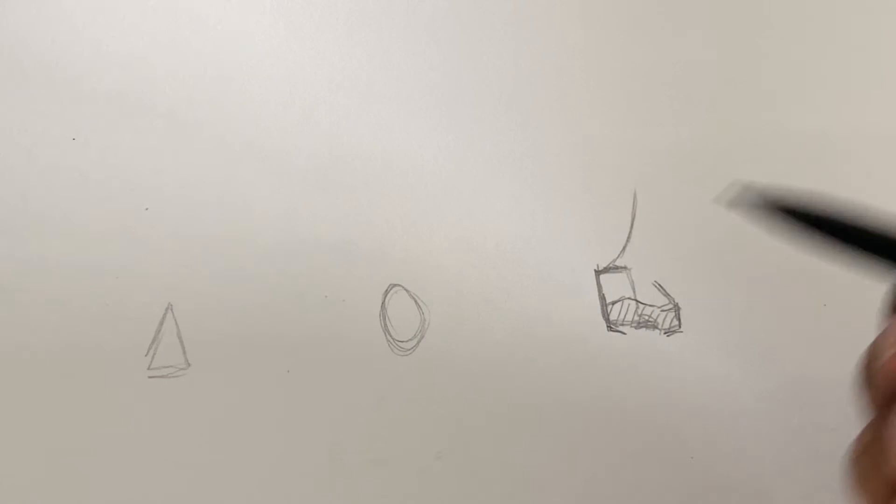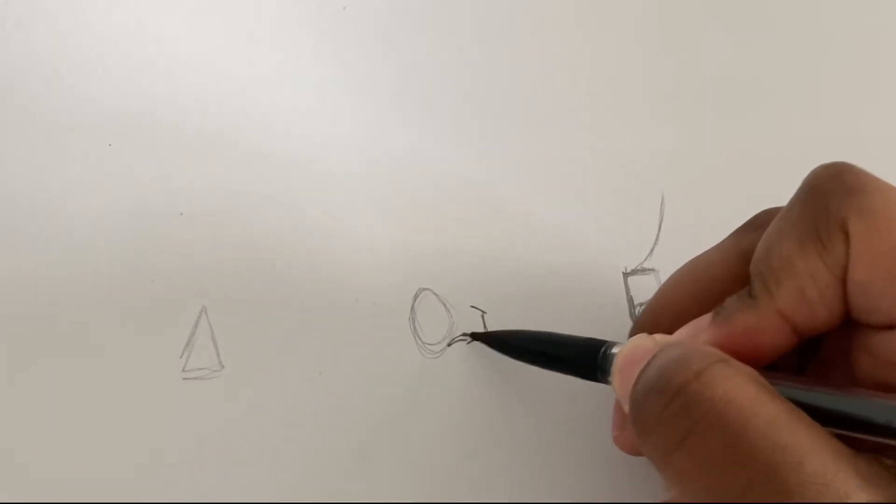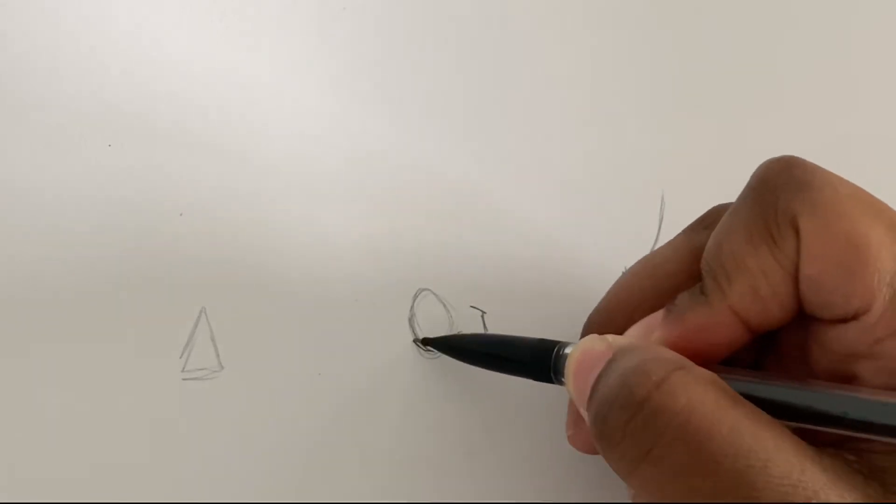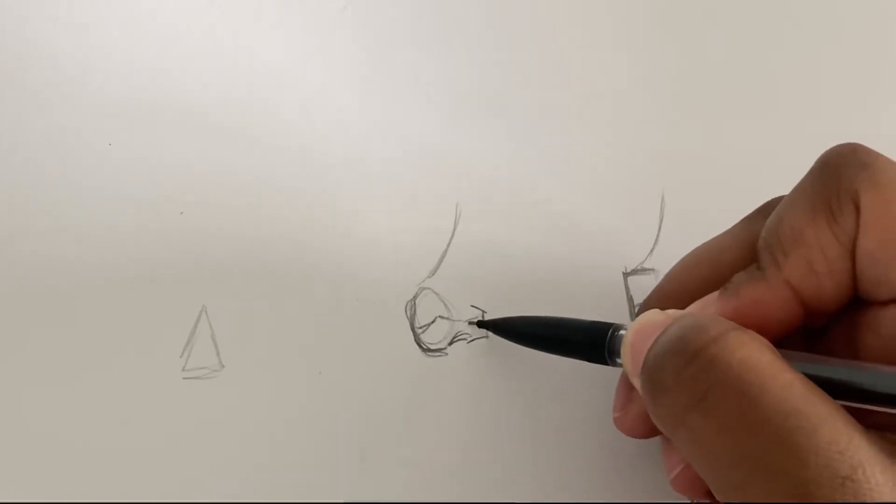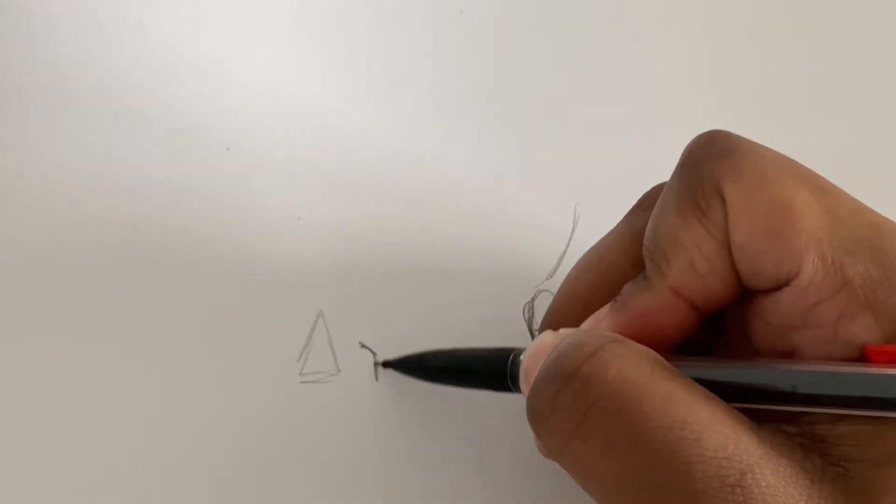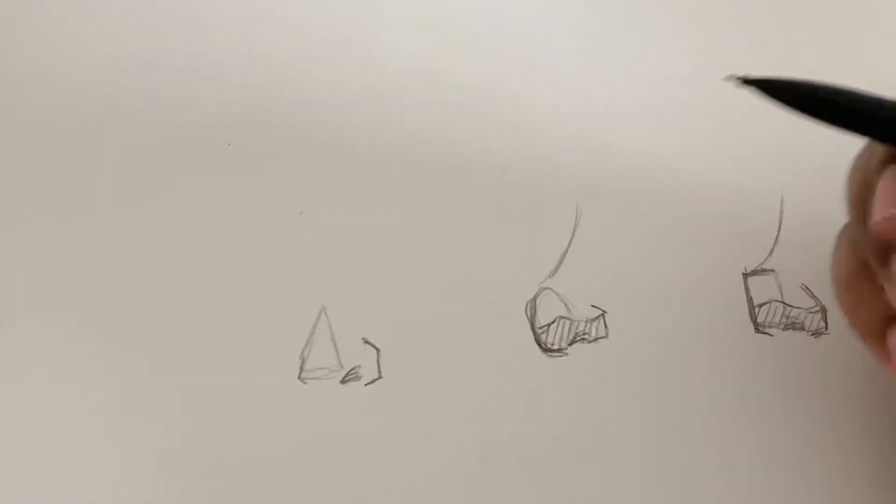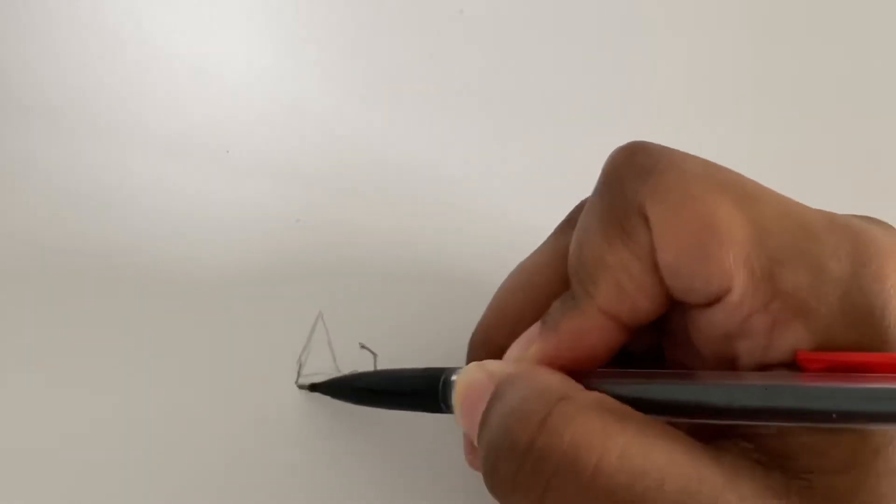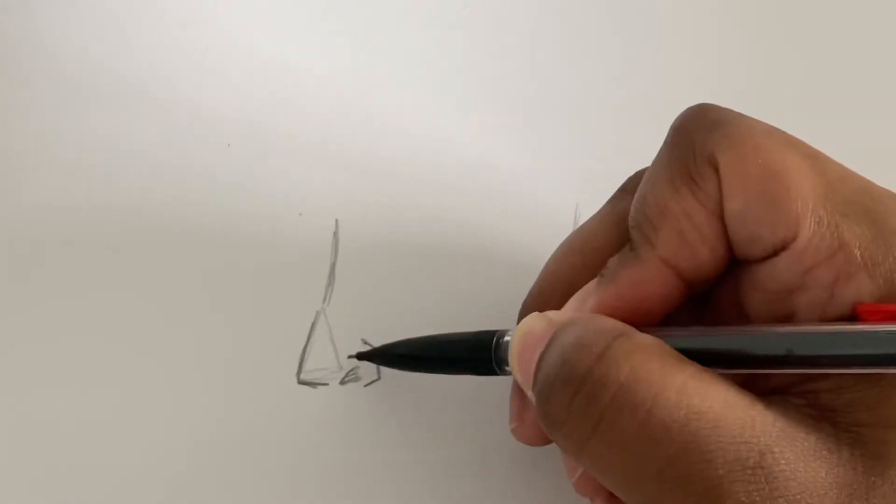So moving on to the circle, we're going to do the same thing but follow along the contour line of the circle. So in this one you can really see that character and that definition.